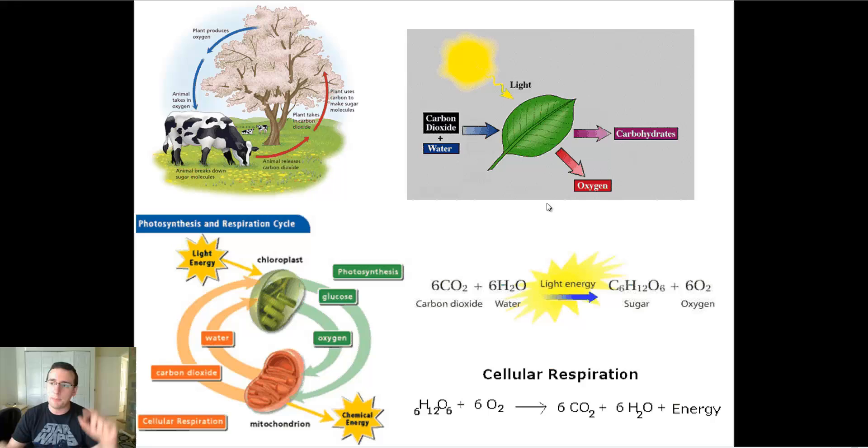Inside the leaves of plants and algae, it happens inside of a little thing called chloroplast, a little organelle that does that. You see here on the left side. Now, anything that consumes that sugar to get the energy out of it is going to be doing the opposite. It's going to get the sugar.